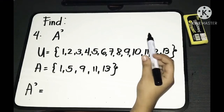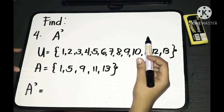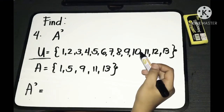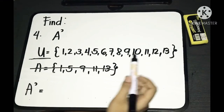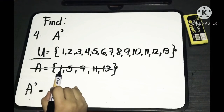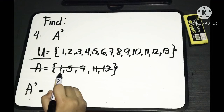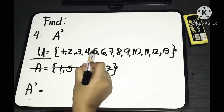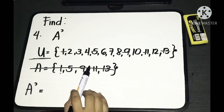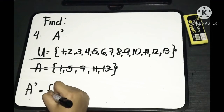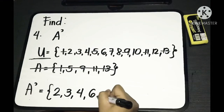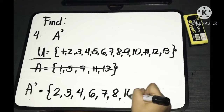Let's have A complement. For the complement of a set, we always depend on the universal set. We cancel out all the elements we have in set A from the universal set. The elements 1, 5, 9, 11, and 13 are cancelled out. The remaining elements in the universal set are the answer for A complement: 2, 3, 4, 6, 7, 8, 10, and 12.